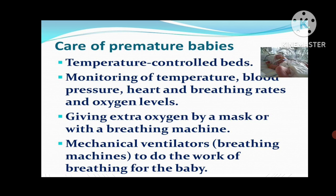As explained, since the lungs are not properly matured, the premature baby has problems with breathing and maintaining oxygen saturation levels, so they may need assistance — mechanical ventilation can be used to do the work of breathing for the baby. Extra oxygen can be given by a mask or with a breathing machine if needed.